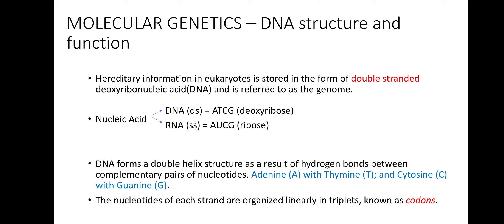DNA forms a double helix structure as a result of hydrogen bonds between the complementary pairs of nucleotides — adenine with thymine, cytosine with guanine. The nucleotides of each strand are organized linearly in triplets, known as codons.